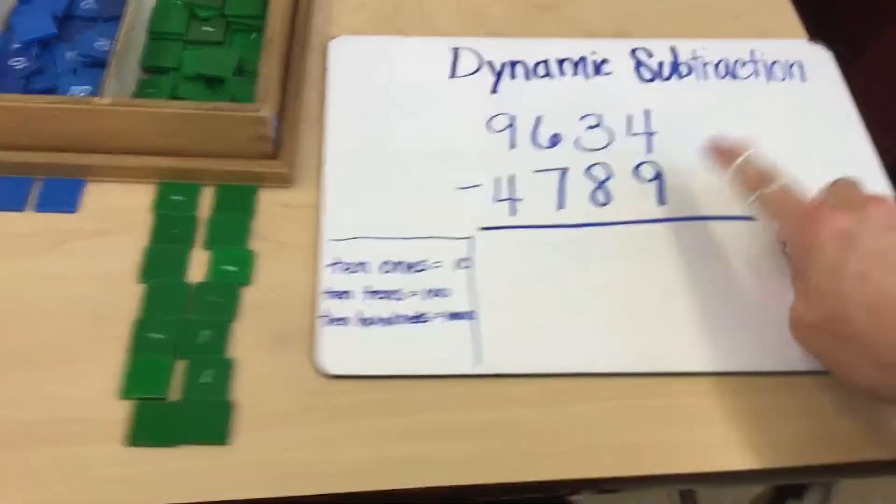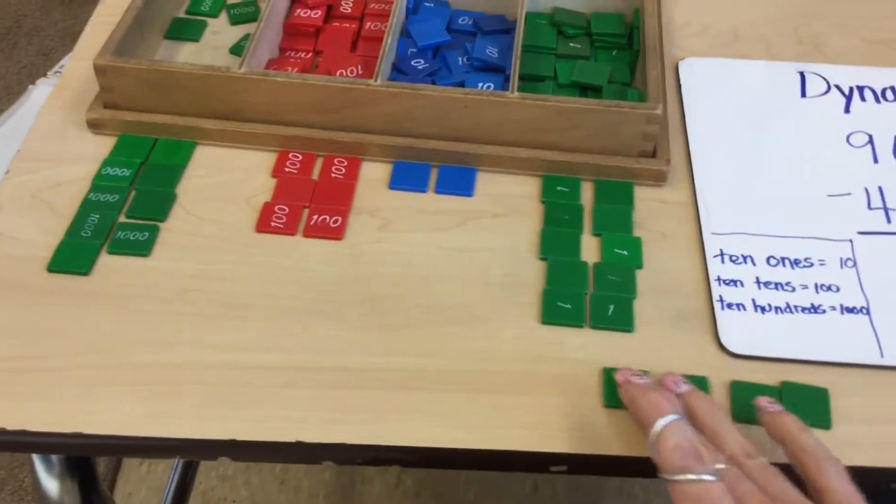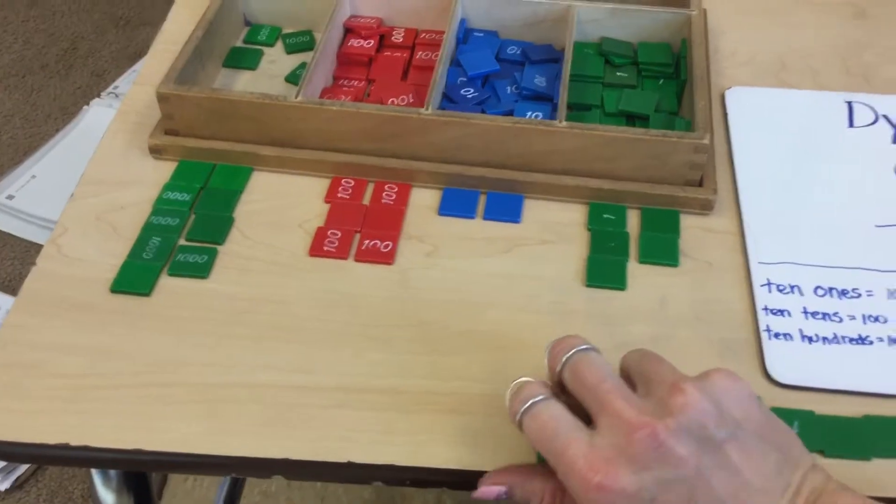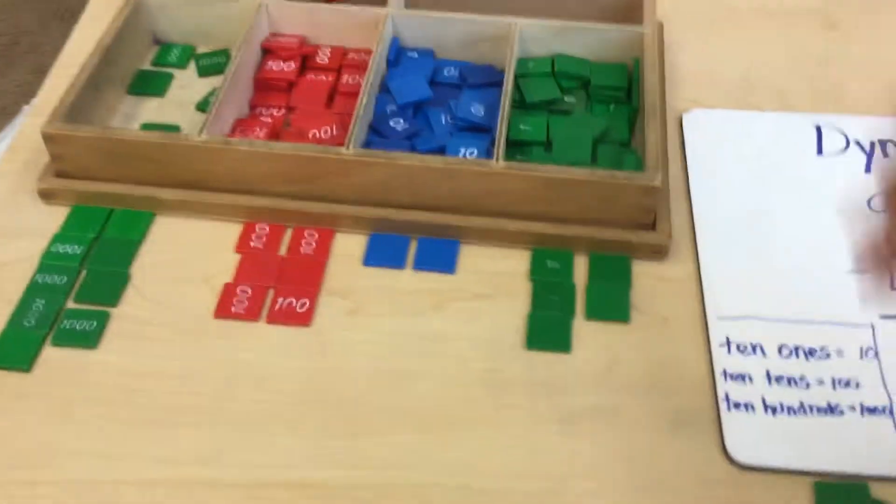So now I have a total of fourteen ones. I now need to take away nine. So I've taken away my nine. I put them back into the stamp game because I no longer need them.